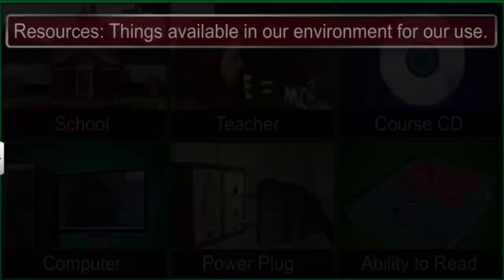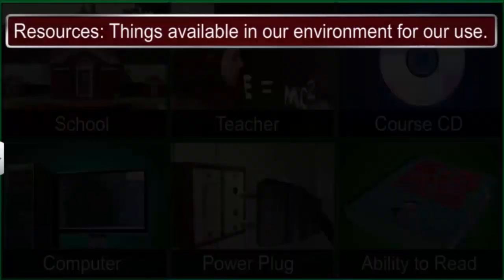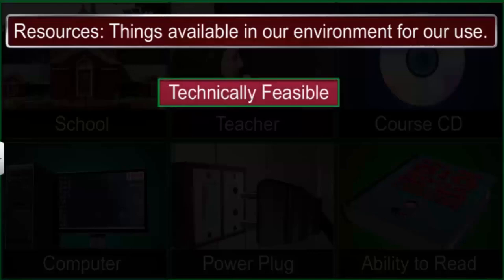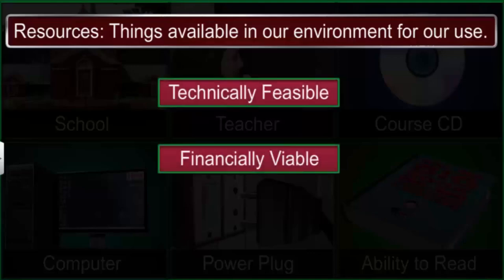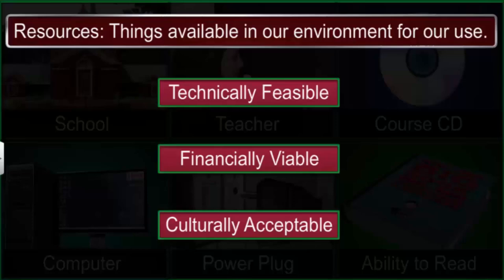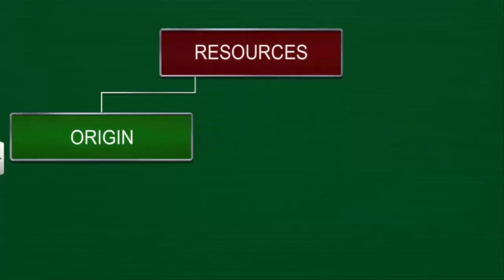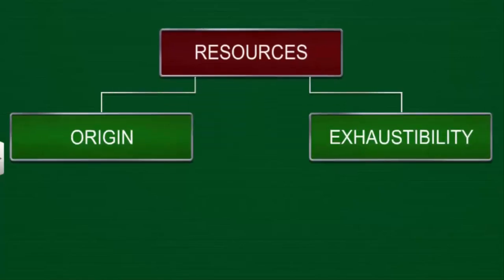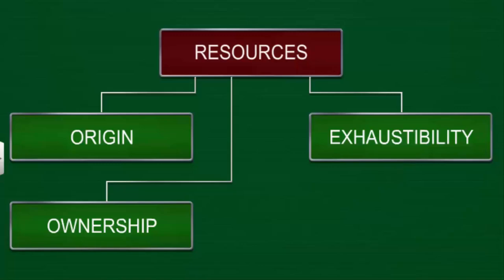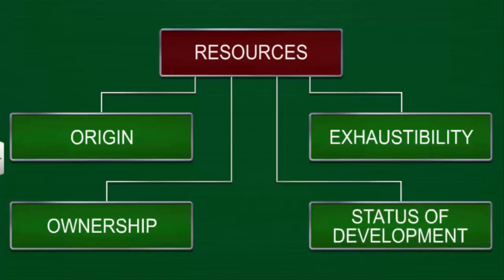The things available in our environment that can be used to satisfy our needs are called resources, provided they are technically feasible, financially viable, and culturally acceptable. Resources can be classified based on their origin, exhaustibility, ownership, and status of development.